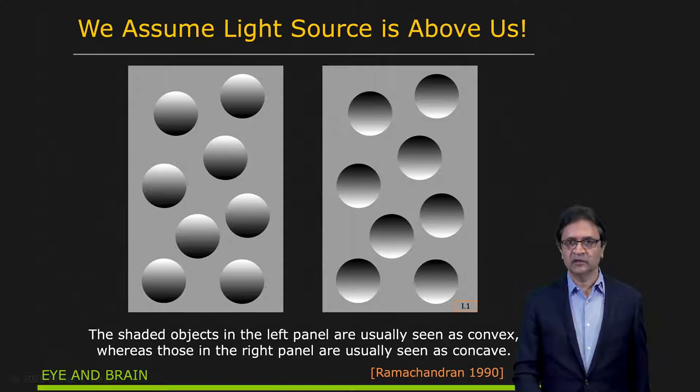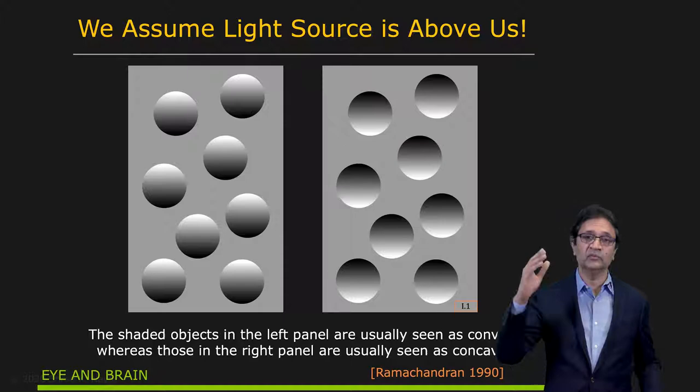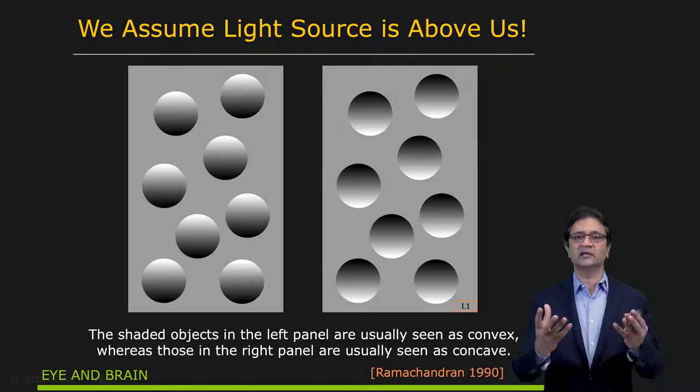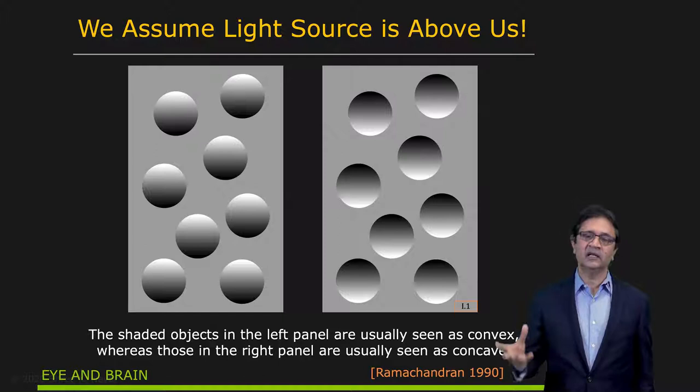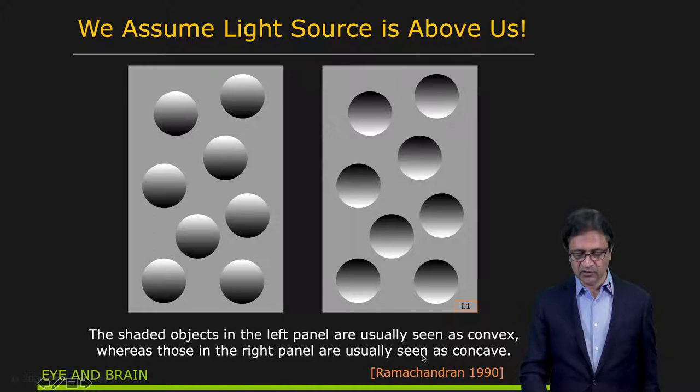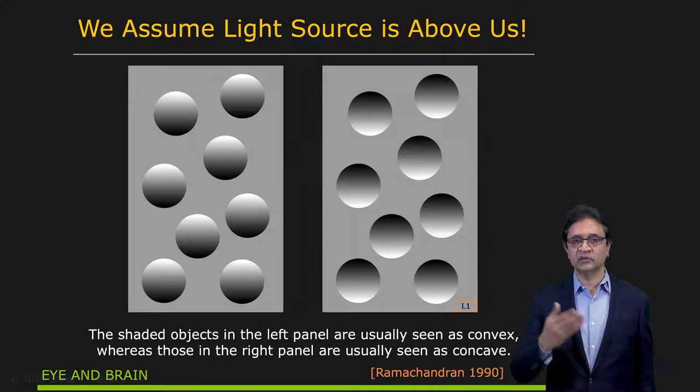Why is this the case? It turns out that we assume the light is actually above us — that illumination is falling from above. This doesn't seem unreasonable because we live in a world where we have the sun, and by and large, lighting tends to come from above. We seldom have lighting coming from below. That assumption is invoked up front and then used to interpret the shape of the shaded object. So shaded objects in the left panel are seen as convex, and shaded objects in the right panel are seen as concave, because we assume the lighting comes from above.